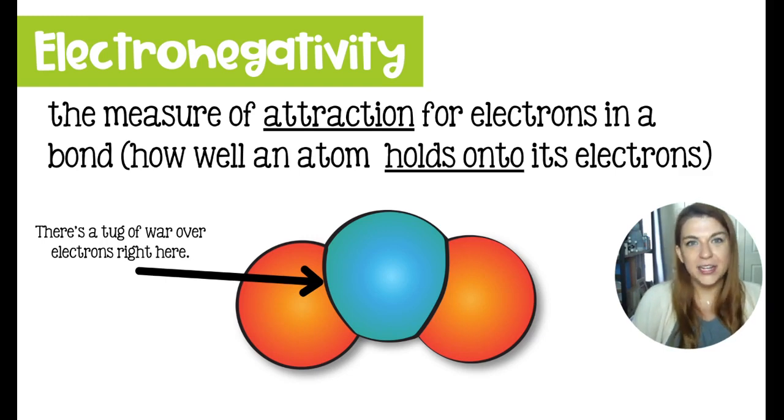The next trend of the periodic table is electronegativity. It's kind of similar to ionization energy, except kind of the opposite. It is the measure of the attraction for electrons in a bond, or in other words, how well an atom holds on to its electrons.